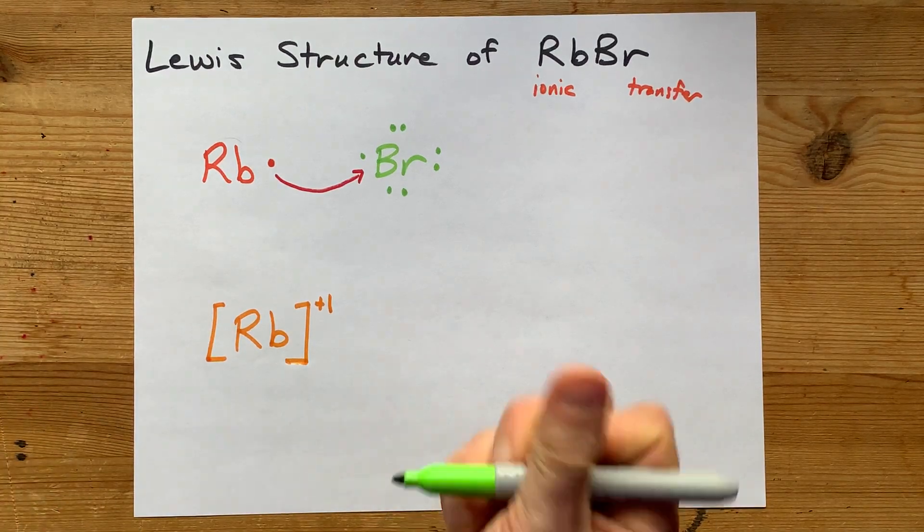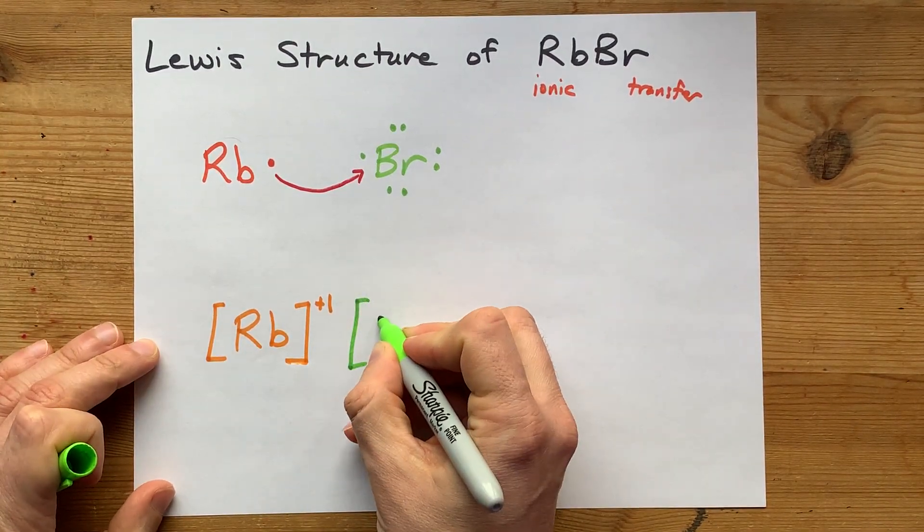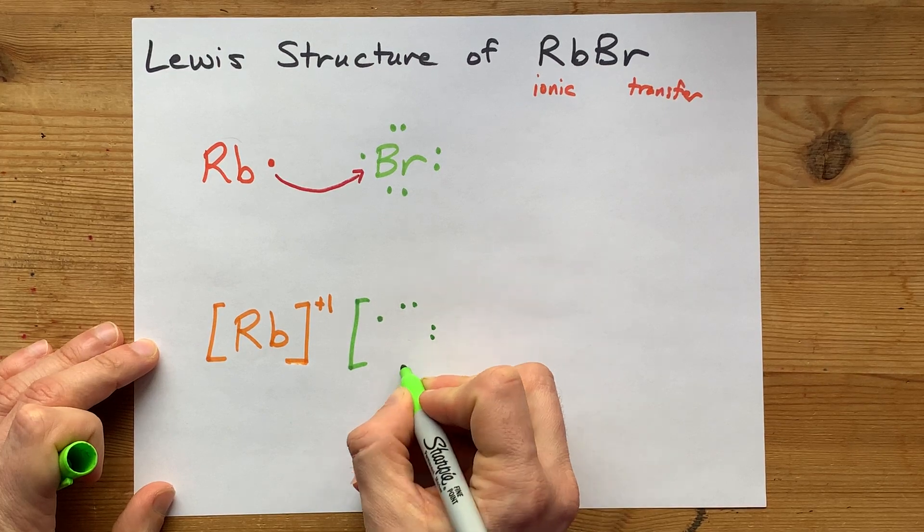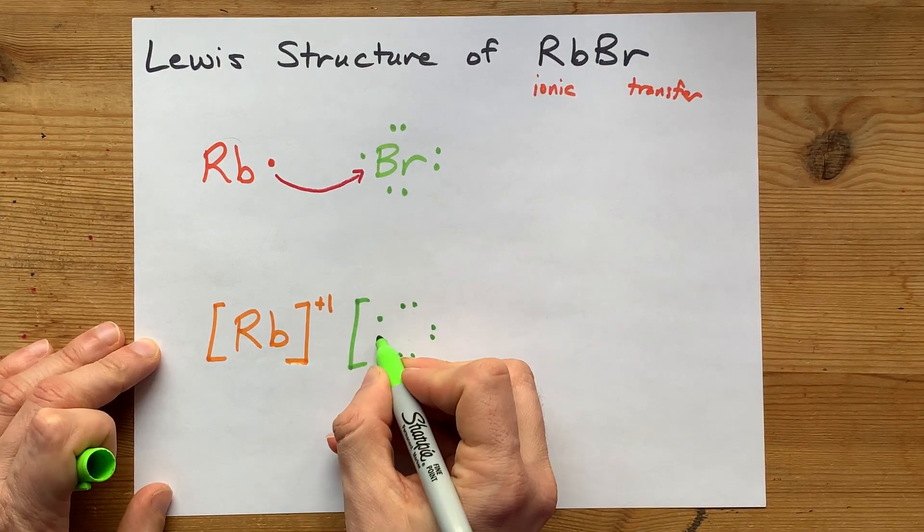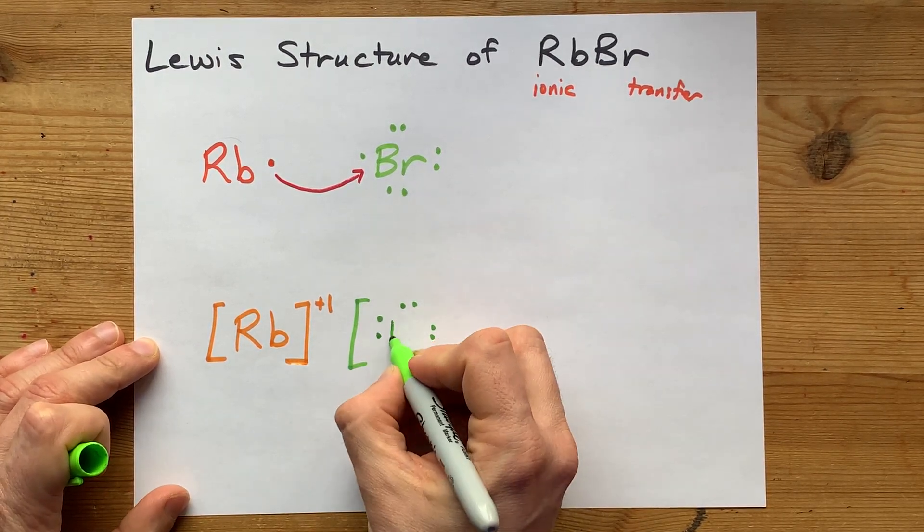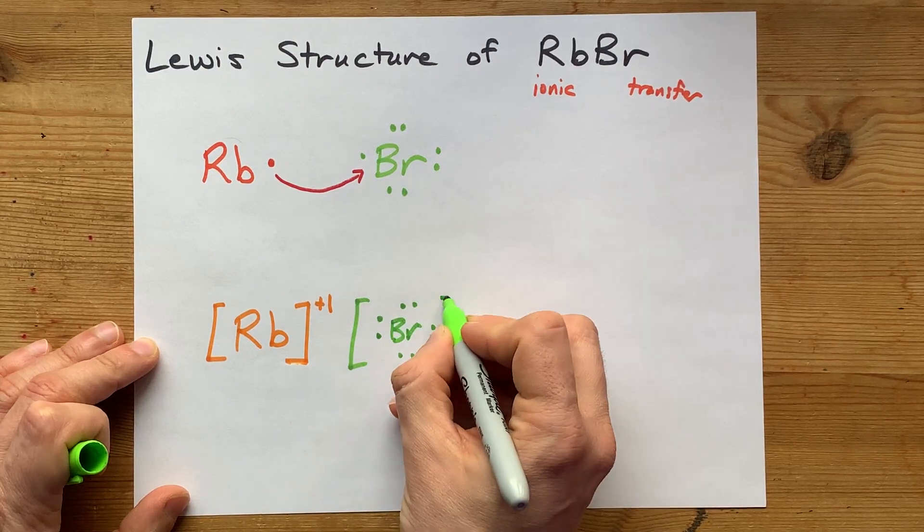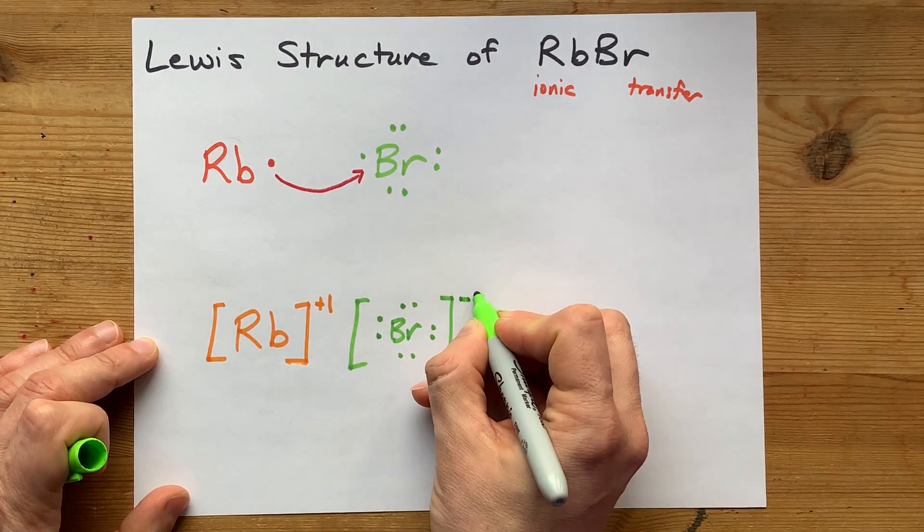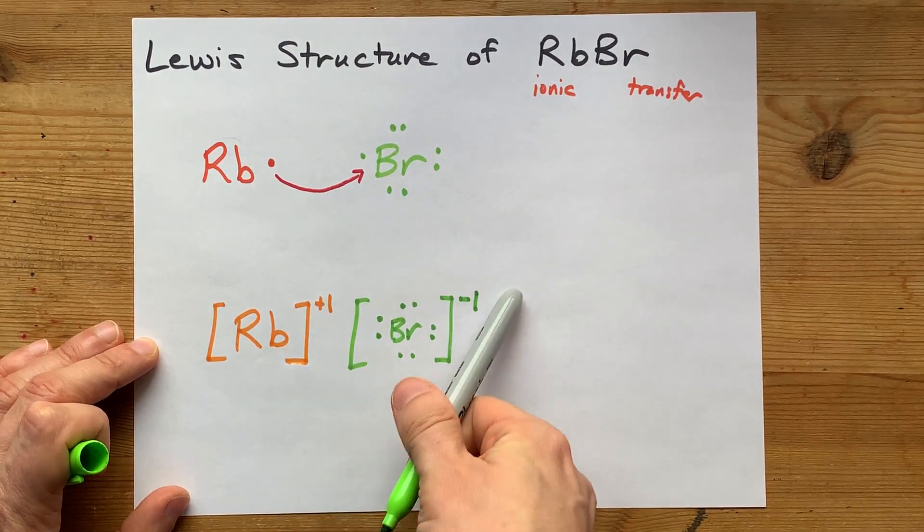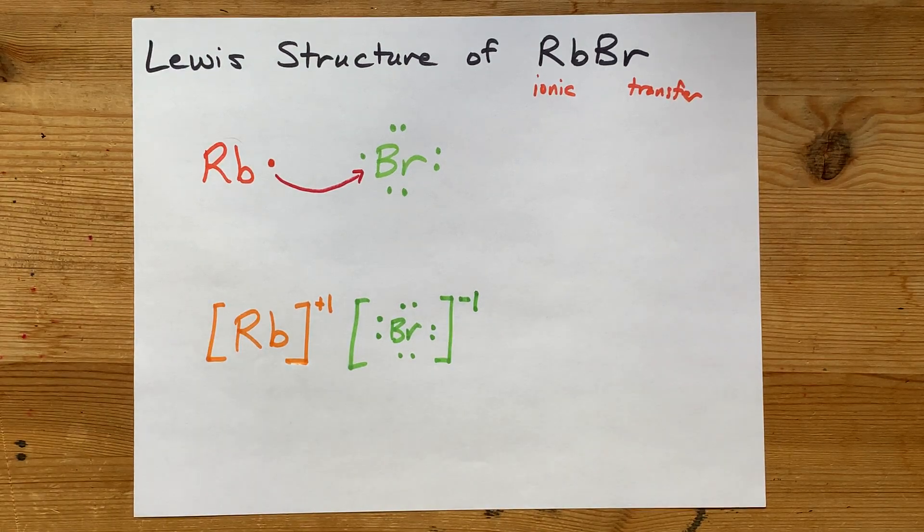And the bromine, you're going to have to draw with eight electrons. Remember, it brought seven, but then got a bonus one from rubidium. There is my bromide, square brackets, with one extra negatively charged electron. It has a charge of minus one.